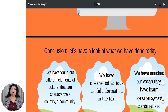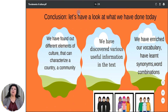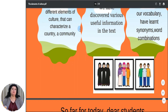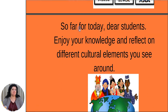So to conclude, let's have a look at what we have done today. First of all, we have found out different elements of culture that can characterize a country or a community. Then we have discovered various useful information in the text. And finally, we have enriched our vocabulary, learned synonyms, phrases and word combinations. We hope you found a lot of new and useful information in this text and this unit. So far for today, dear students — enjoy your knowledge and reflect on different cultural elements you see around. See you next time!